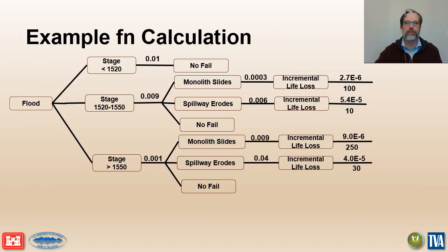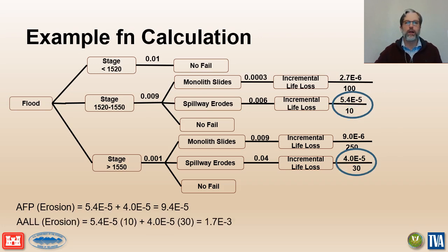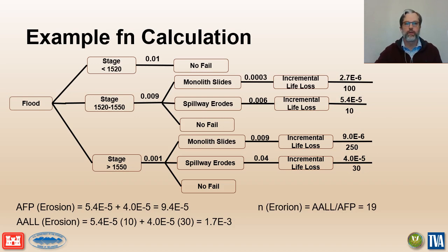This simplified example demonstrates the event tree calculations for an individual potential failure mode. The annual failure probability is calculated by adding the failure probabilities for each n branch of the event tree corresponding to the failure mode. The annualized life loss is calculated by adding the product of the probability and the corresponding life loss estimate for each n branch. The little n value for the little fn plot is then calculated by dividing the average annual life loss by the annual failure probability — representing the average life loss over all possible ways that failure could occur for this specific failure mode.